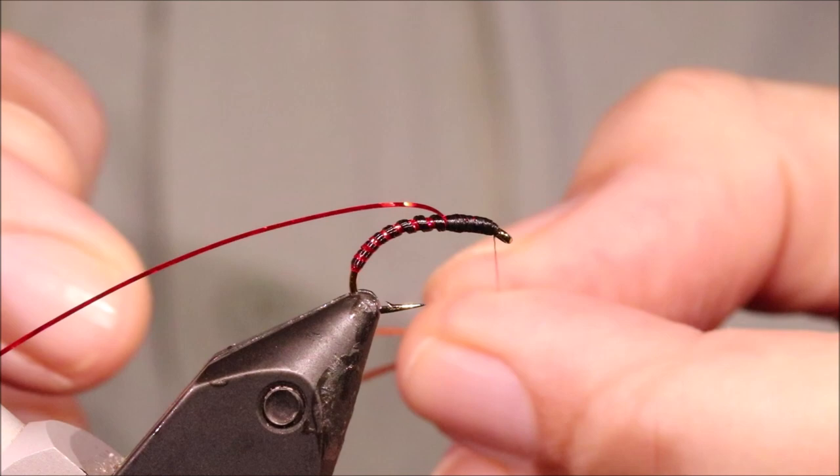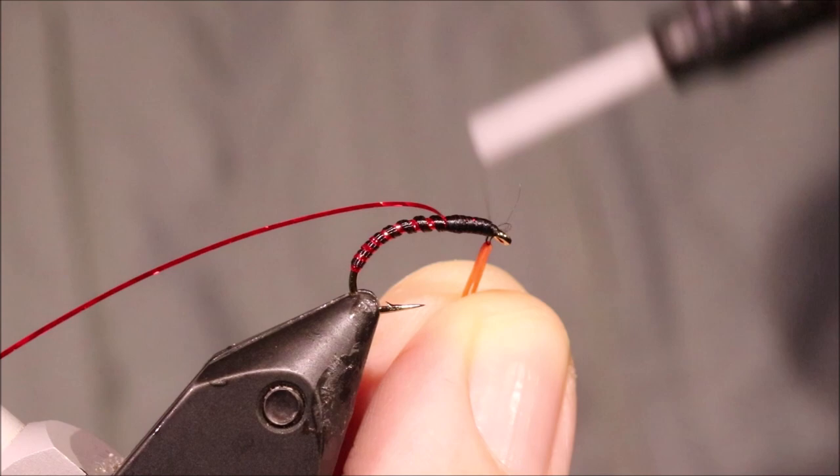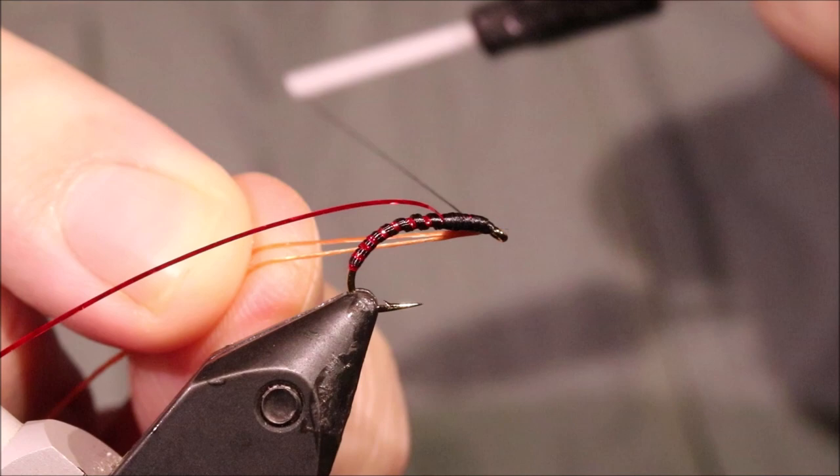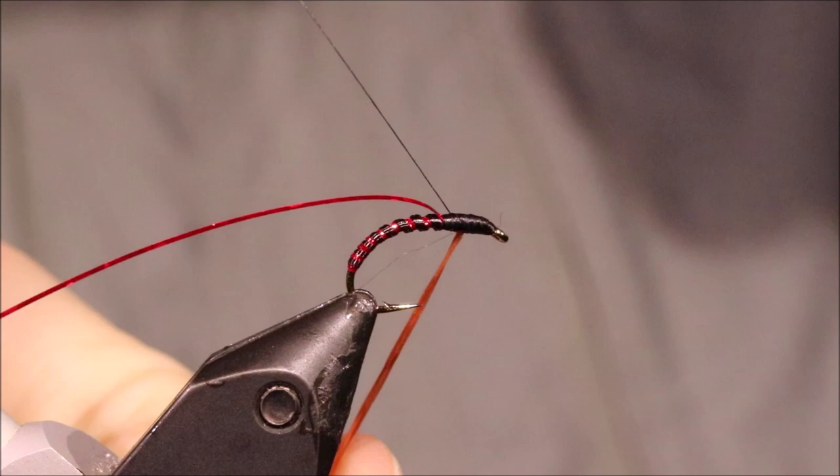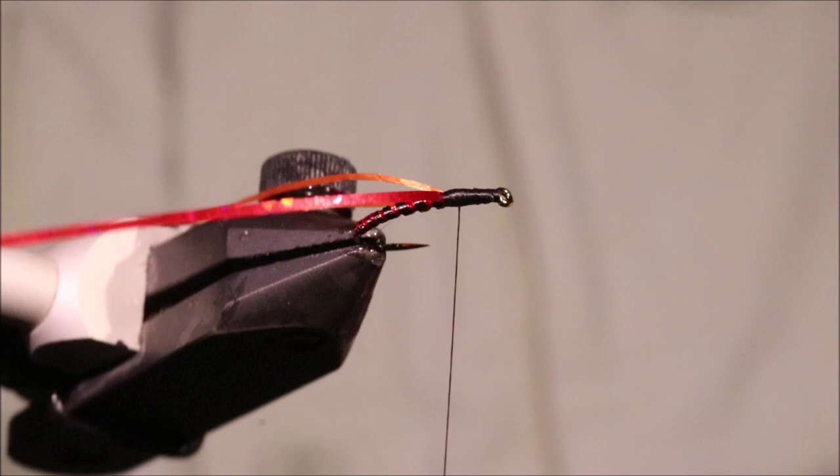And then I'll take some orange flex floss. Fold it over my thread. Nice and tight. Oops, I'm there. Put it back. Just secure it all the way along.